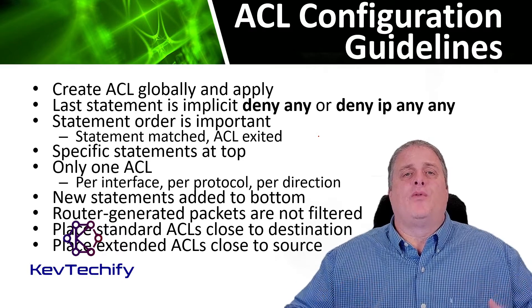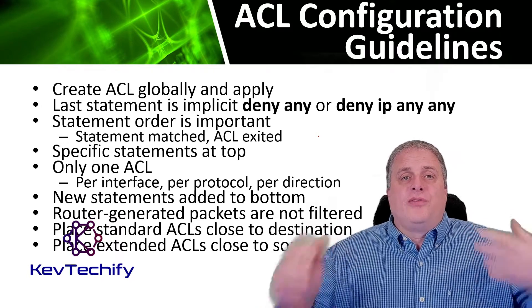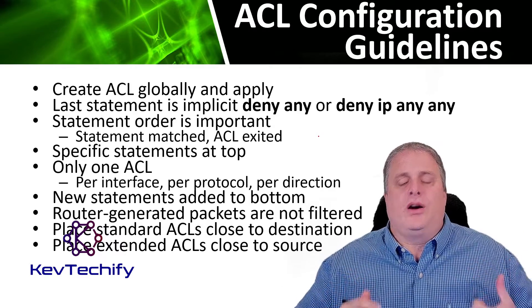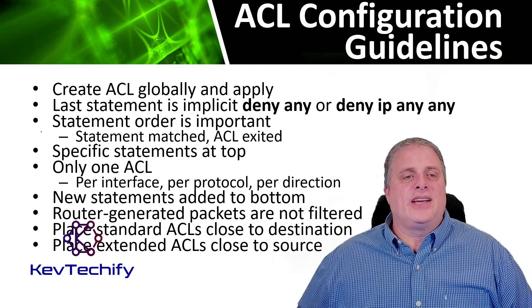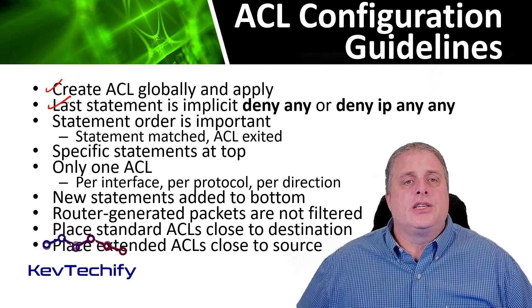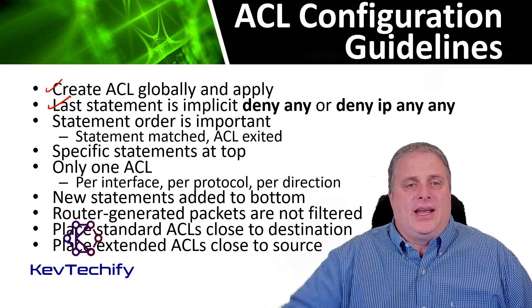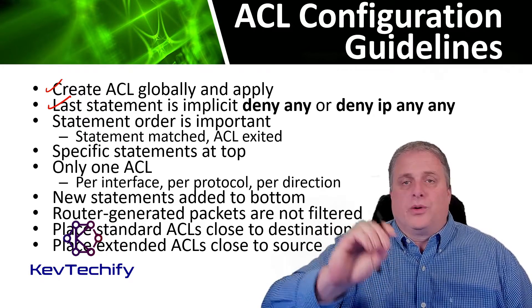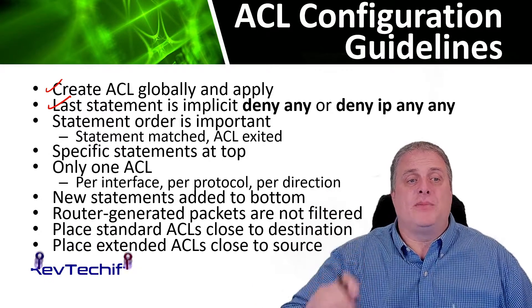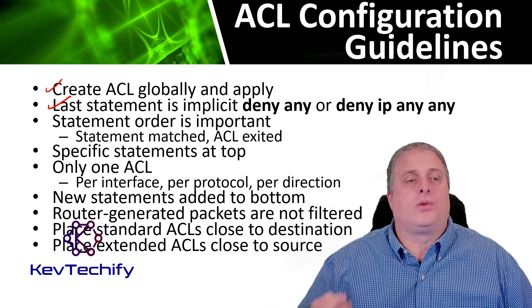An ACL is made up of one or more access control entries, typically referred to as ACEs or statements. When configuring and applying an ACL, there are a couple of guidelines you need to be aware of. First, create ACLs globally and then apply them. Next, ensure that the last statement is an implicit deny any — or deny IP any any. It's implicitly denied; you won't see it, but it is there. It will deny all traffic, so one of the statements before it must permit traffic, otherwise no traffic will ever make it through.